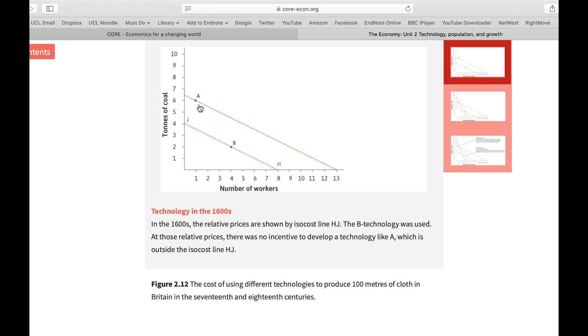As you can see, Technology A lies to the right of our isocost curves. So it didn't make economic sense to move from B to A.